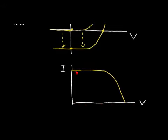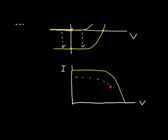We get a current versus voltage curve for the solar cell. If we decrease the light intensity, this curve will move down. If we increase the light intensity, the curve will move up, producing more voltage and more current.